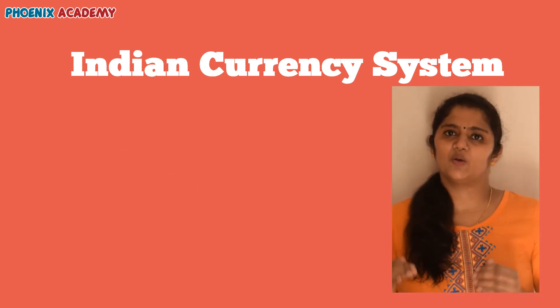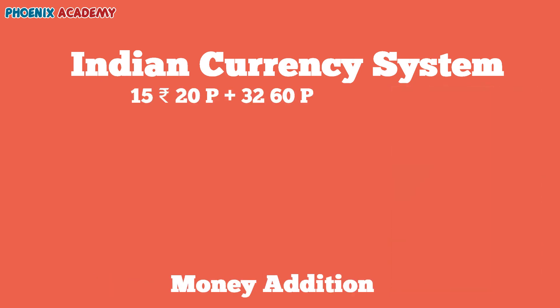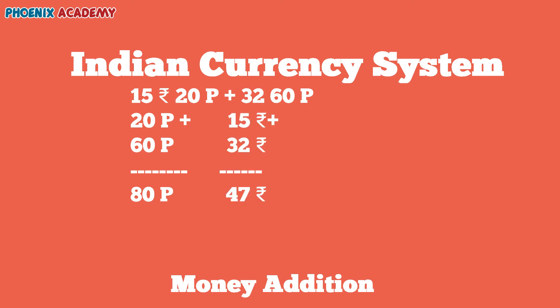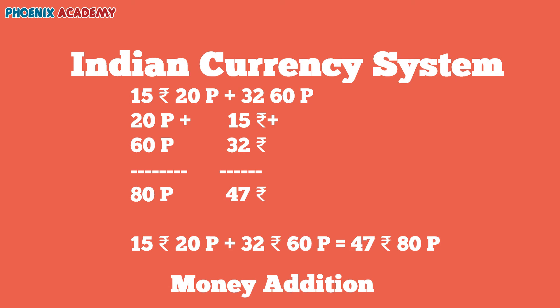Let us add rupees and paise. Let's add 15 rupees 20 paise and 32 rupees 60 paise. Let us add 20 paise and 60 paise — we will get 80 paise as the sum. Then add rupees 15 and 32: 5 plus 2 is 7, 1 plus 3 is 4, we will get 47 rupees. So the sum is 47 rupees 80 paise.